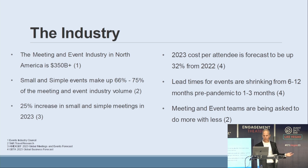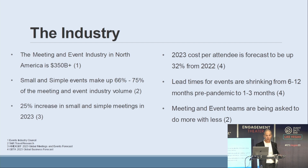Sources like the Event Industry Council, Skift Travel Research, Amex GBT, and GBTA give us some key data points. The meeting and event industry in America is valued at over $350 billion. Small and simple events represent well over 50% of expenditures, and there was a 25% increase in small and simple meetings in 2023.